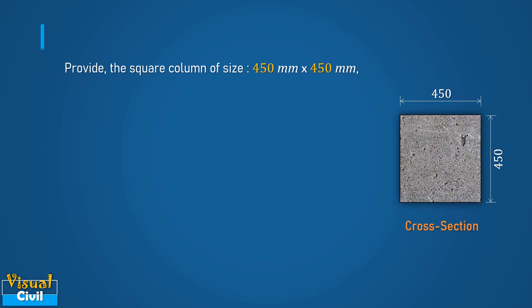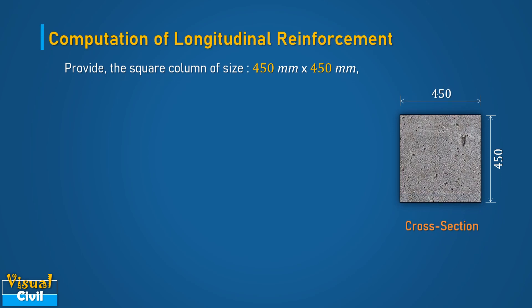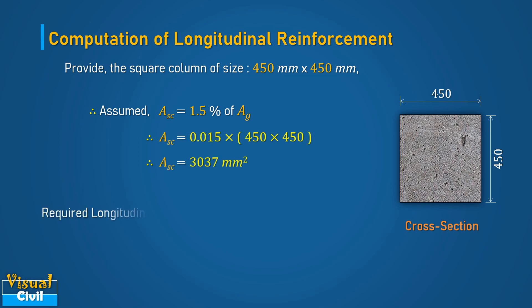In the next step, compute the longitudinal reinforcement. It was assumed that the area of longitudinal reinforcement ASC is equal to 1.5% of the gross cross-sectional area of the column. Therefore, after computation, we get the area of reinforcement equal to 3037 mm².